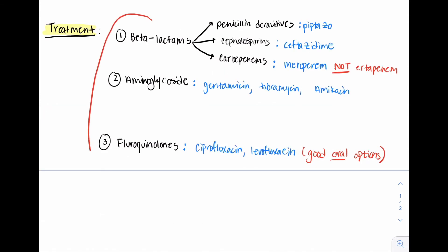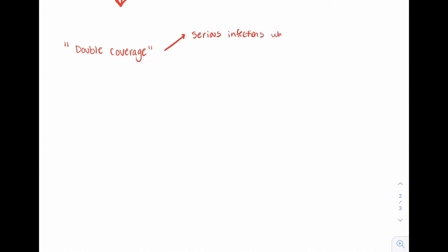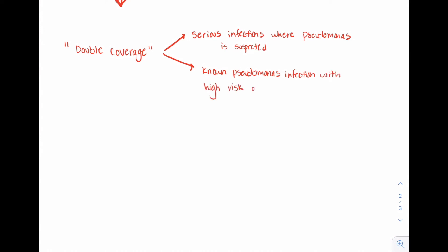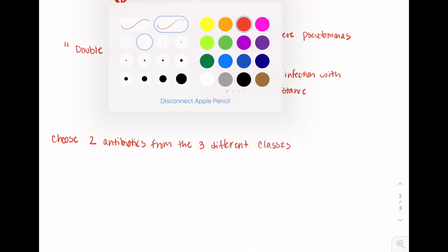The reason I like to break the antibiotic choices into these three main categories is because of the concept of double coverage. Double coverage means using two different antibiotics to cover Pseudomonas in certain situations — for example, serious infections where Pseudomonas is suspected, such as a hospitalized patient that becomes acutely unwell and septic, or a patient with a known Pseudomonas infection but a high risk of resistance, such as a patient with cystic fibrosis or chronic lung disease who has been on a variety of antibiotics in the past and is therefore at high risk for resistant organisms.